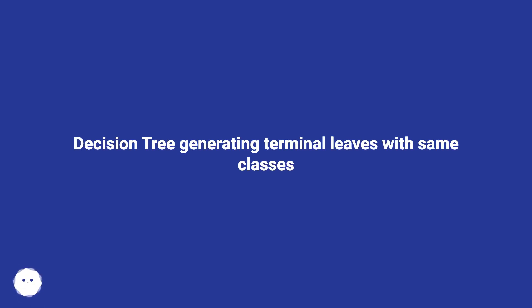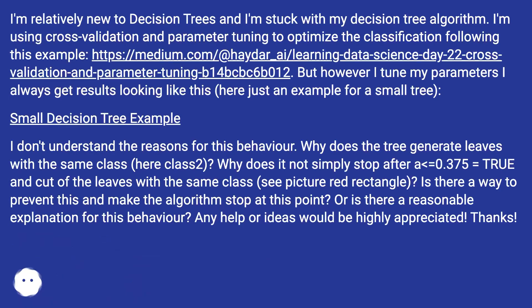I'm relatively new to decision trees and I'm stuck with my decision tree algorithm. I'm using cross-validation and parameter tuning to optimize the classification, following this example at this URL, but however I tune my parameters, I always get results looking like this — here just an example for a small decision tree.